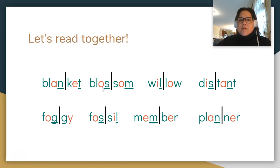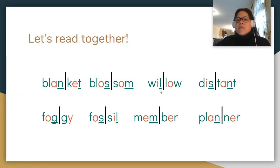Next one. I've got a closed syllable here and a closed syllable here. Sound it out with me: 'bloss' — 'om' — 'blossom.' Good. Next example: I've got a closed syllable here but not here, because remember O-W works together to say 'O.' 'Will' — 'low' — 'willow.' Nice.